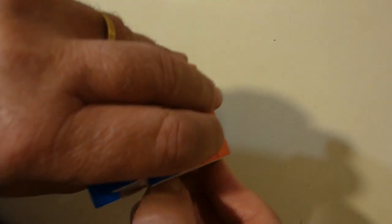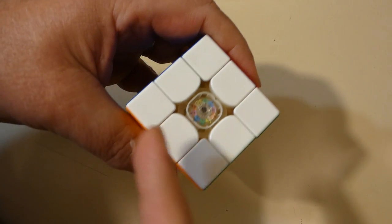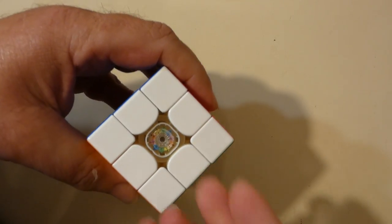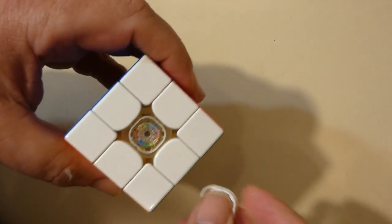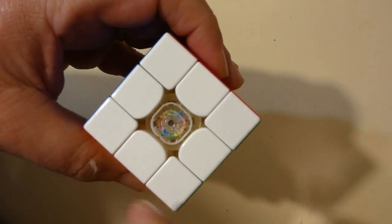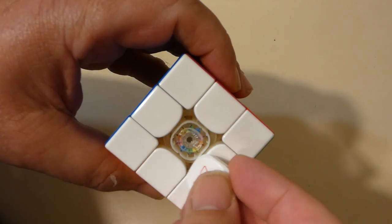So normally with most cubes to disassemble them, the quick way is just to pop a cap, unscrew the central screw, take the top layer off and then take all the pieces out. But because of the adjustment system in the Tornado, you can't do that.